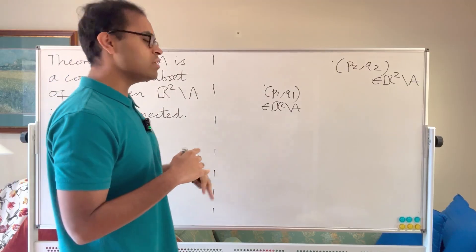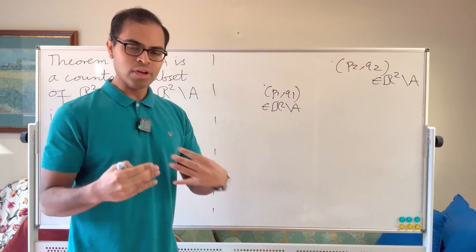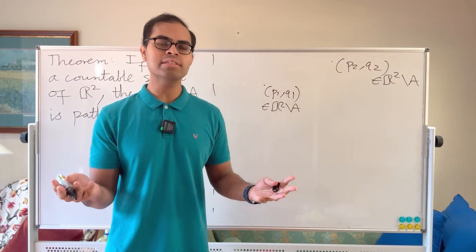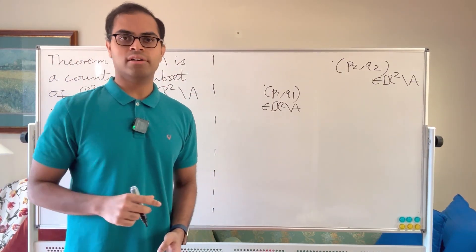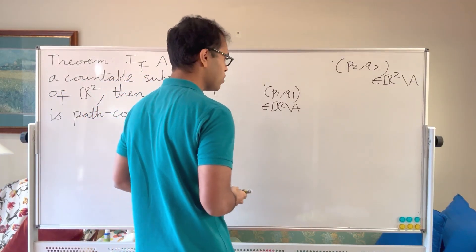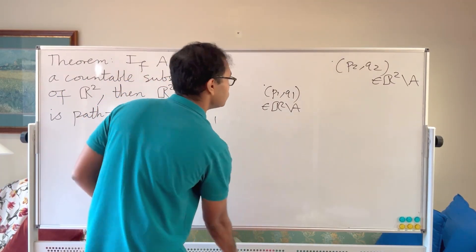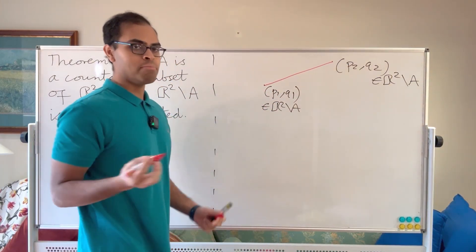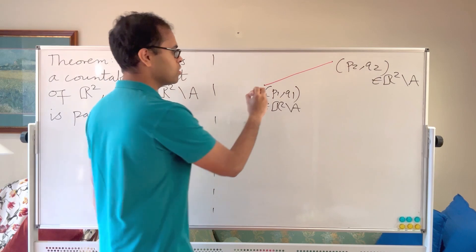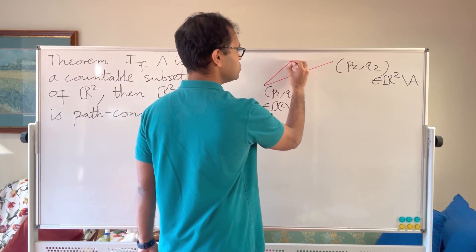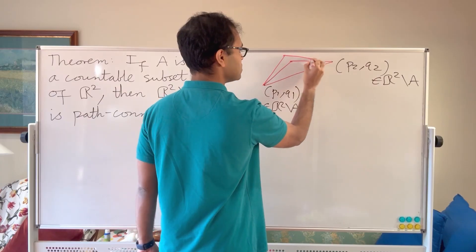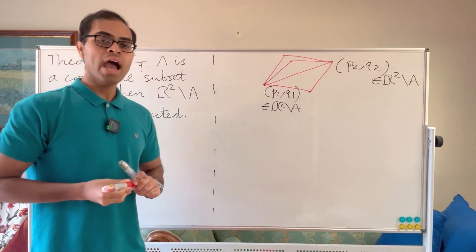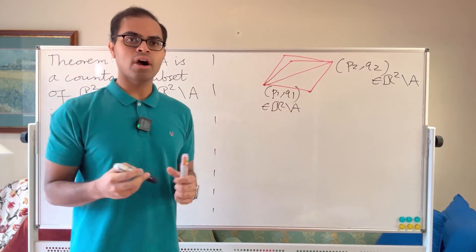This is typical of countability proofs — when you have set-theoretic conditions like countability, showing existence is the way to go. What we're going to do is consider a whole host of possible paths and then show one of them works, without knowing which one exactly. So let's think about possible paths that could connect (p1, q1) to (p2, q2). We could take the straight-line path — that may overlap with A — or we can go various other routes.